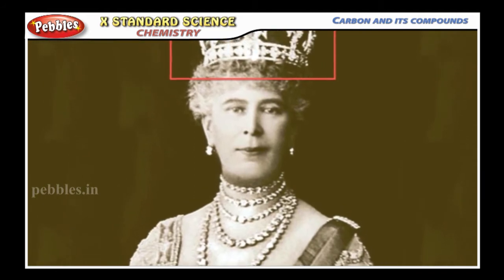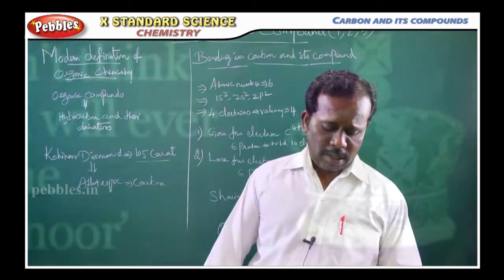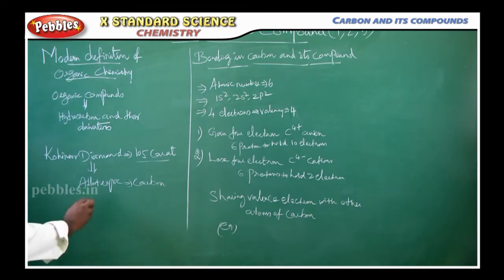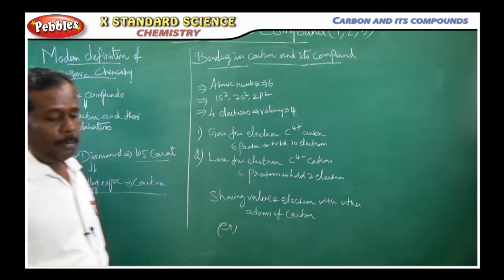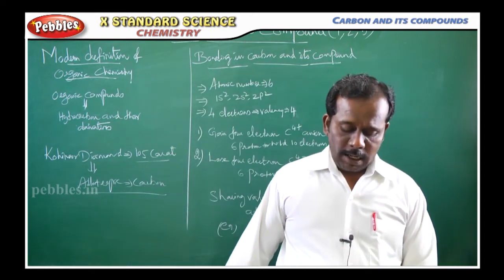You can observe this Kohino diamond structure in the slide part. The most precious diamond is a crystalline allotrope of carbon. It is an allotropic modification of carbon indeed.